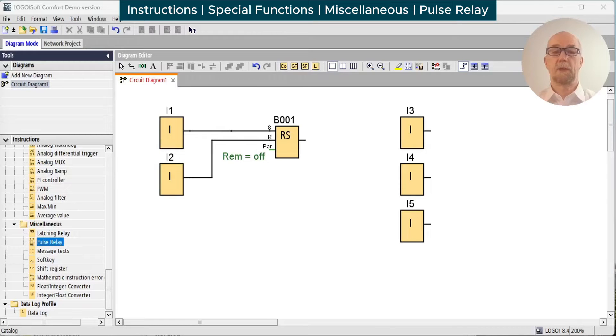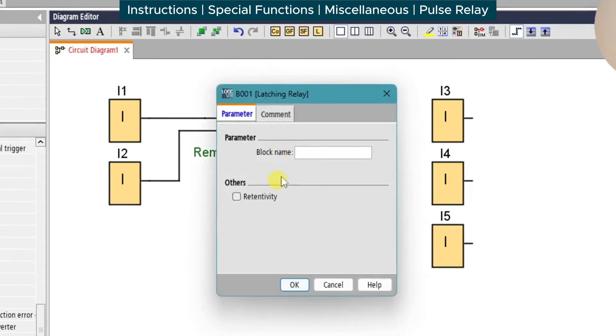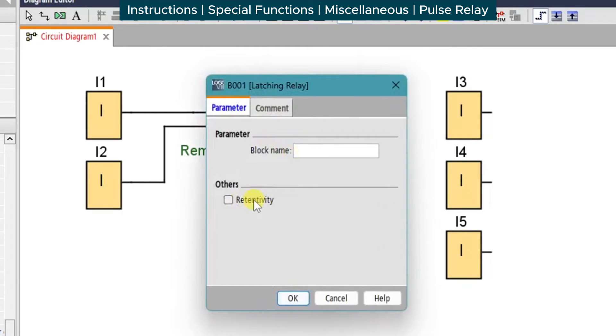Before we look at the pulse relay, we'll do a recap on the latching relay which has the RS symbol. It's very simple. You can give it a block name and you can set its retentivity so it powers up in the same state it powered down.